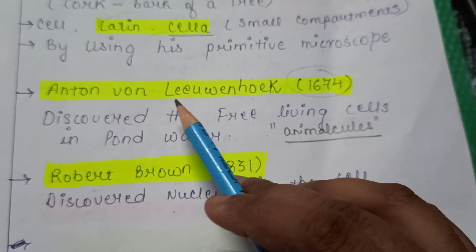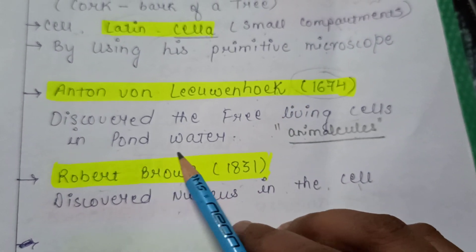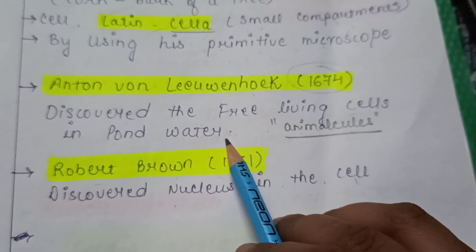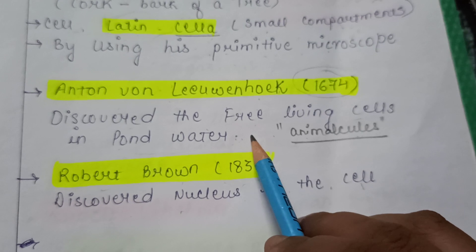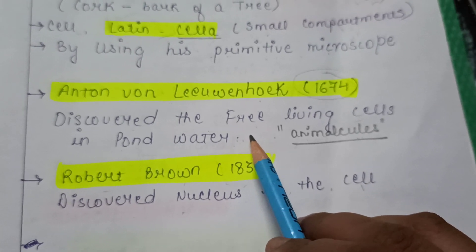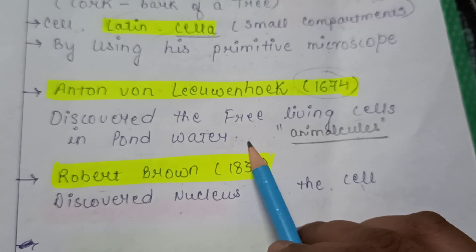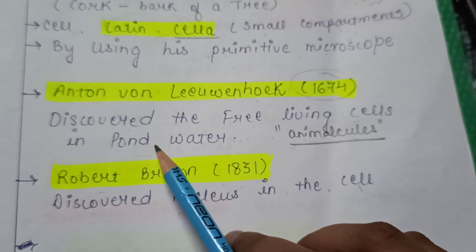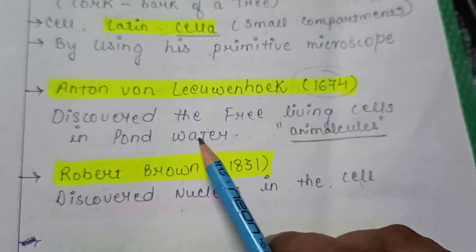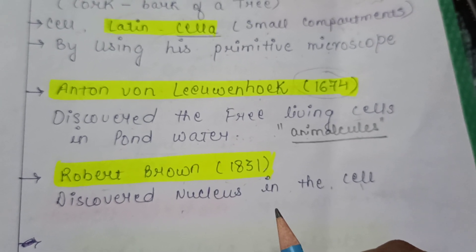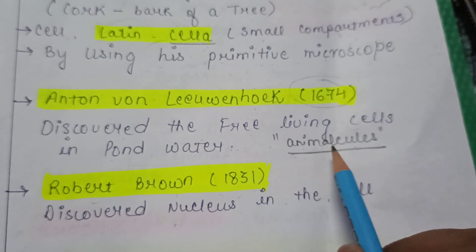The next name is Antony van Leeuwenhoek. He observed pond water and found minute microscopic organisms — those organisms that can only be observed under a microscope. He took a drop of pond water and observed these minute microscopic organisms. He did not name them as cells; instead, Antony van Leeuwenhoek named them 'animalcules.'